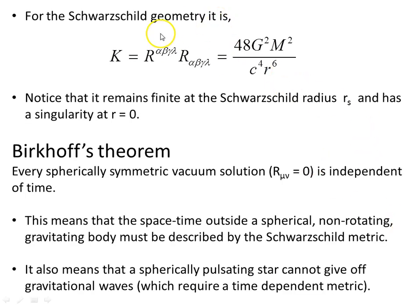For the Schwarzschild geometry, we perform this operation, it's very long and very large, which I've not gone into here, but that gives you this object here, 48 g squared m squared over c to the power of 4 r to the power of 6. This blows up at r equals 0, becomes undefined at r equals 0. The scalar becomes infinite, the curvature becomes infinite, and so r equals 0 is a genuine physical singularity.